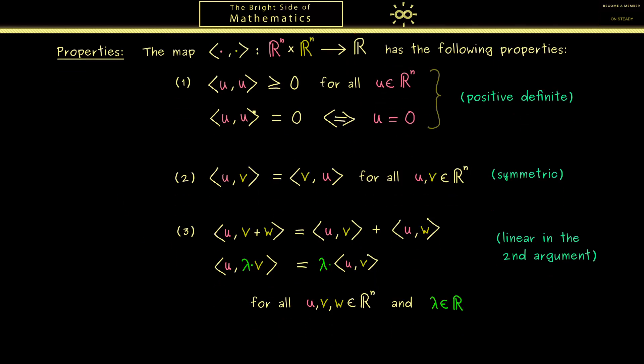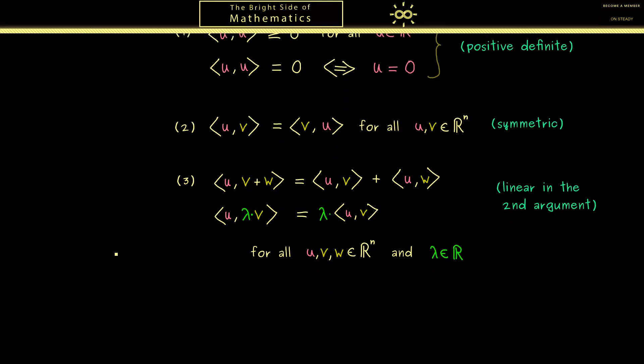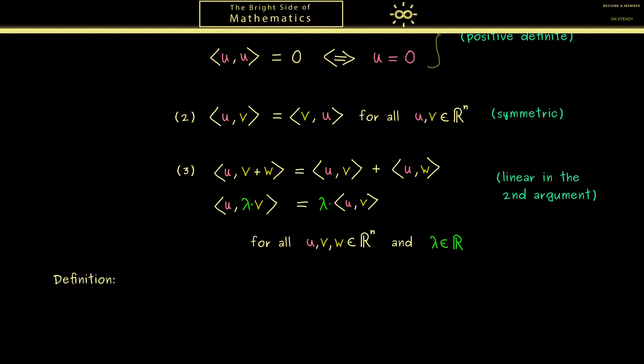And indeed this helps us to measure angles like we have seen in the orthogonality. In addition it also allows us to measure lengths. And this leads us to the next definition, the definition of a norm.